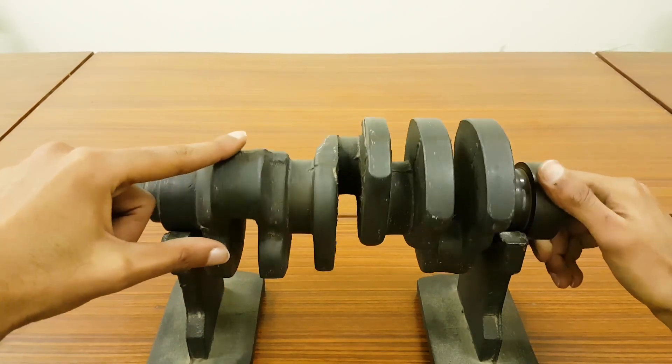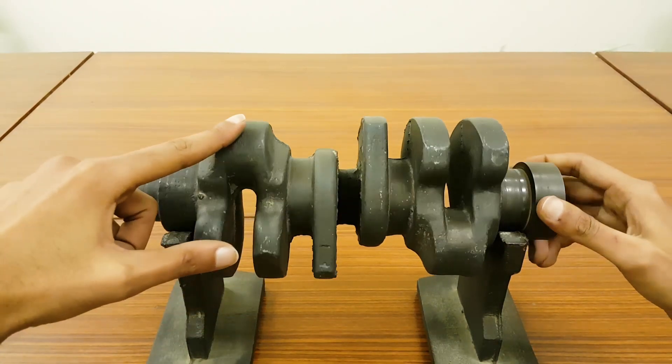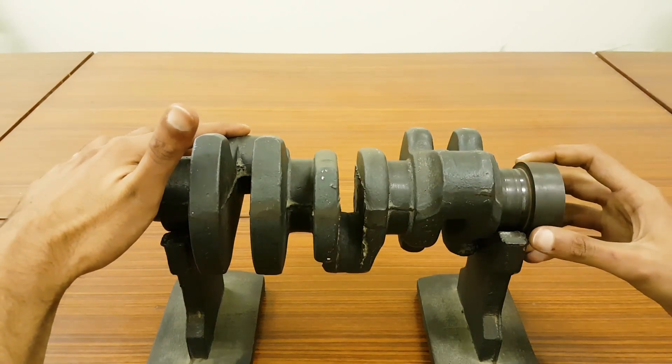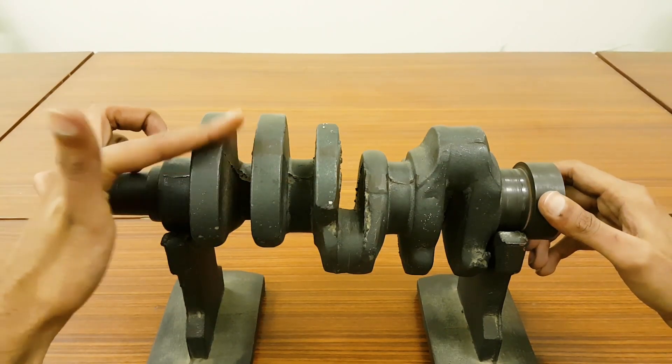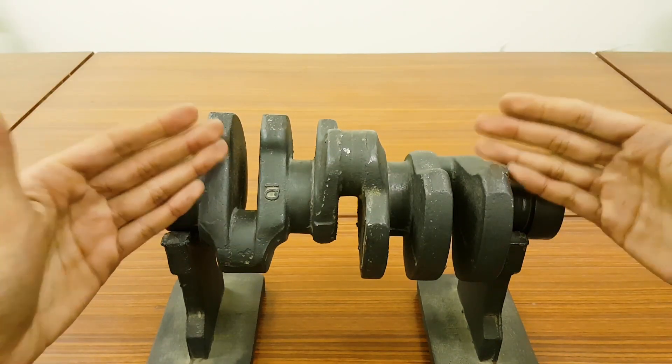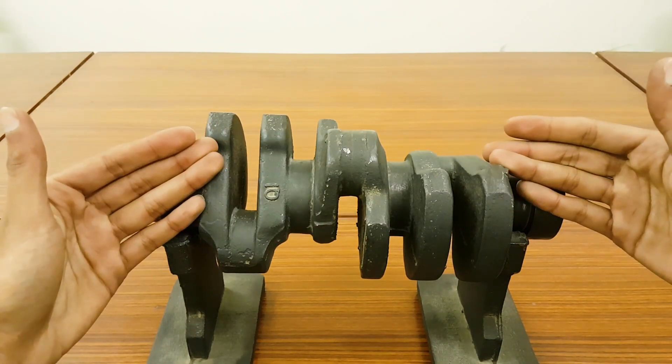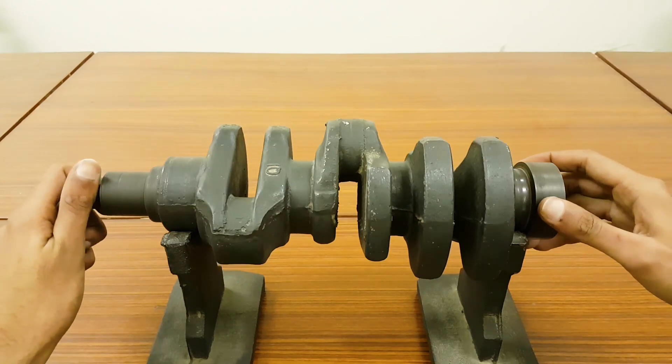They are moving, now the crank pin is moving up so weights go down. Again they move down, the connecting rod moves down but the web comes up. These are basically counterbalancing the inertia produced by your connecting rod and piston. By counterbalancing inertia, you don't receive any vibration.